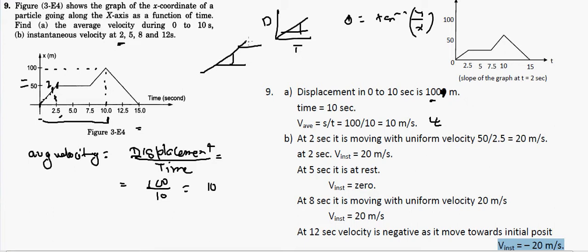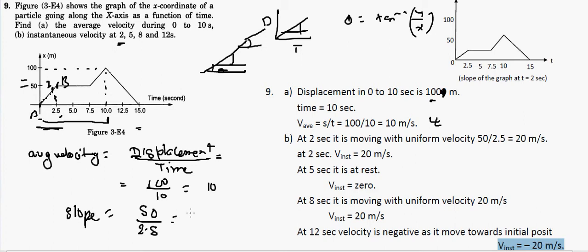To find the slope from 0 to 2.5 seconds: the height is 50 meters and the base is 2.5 seconds, so 50 divided by 2.5 gives 20 meters per second. Therefore, the instantaneous velocity at t = 2 seconds is 20 m/s.